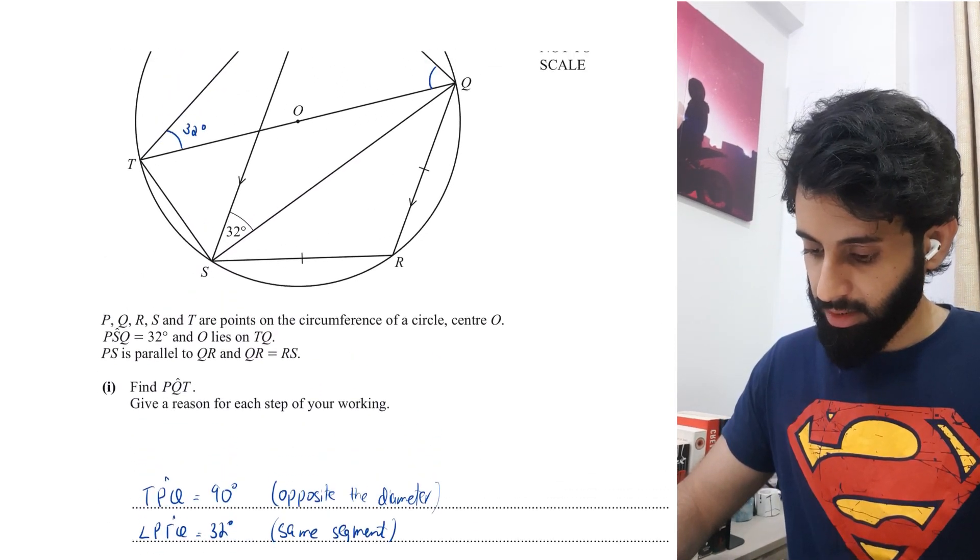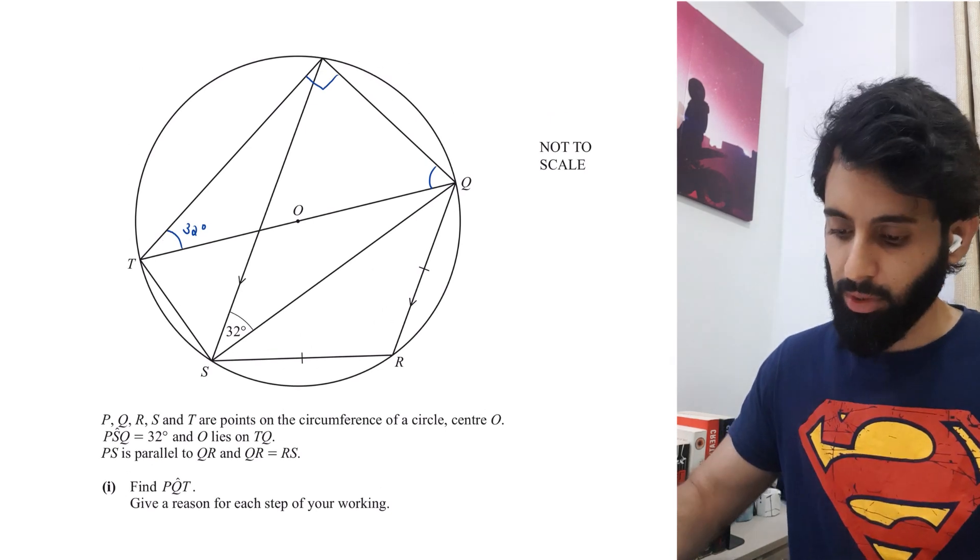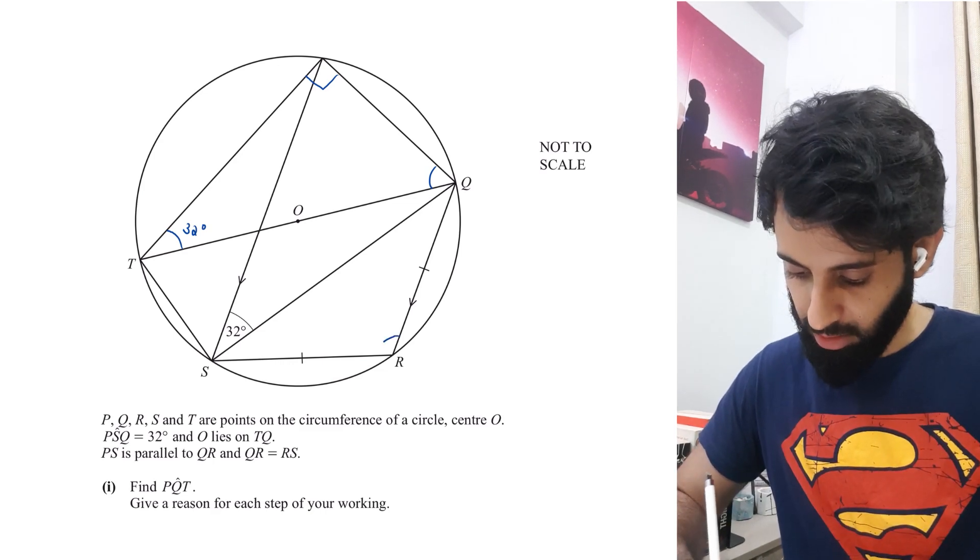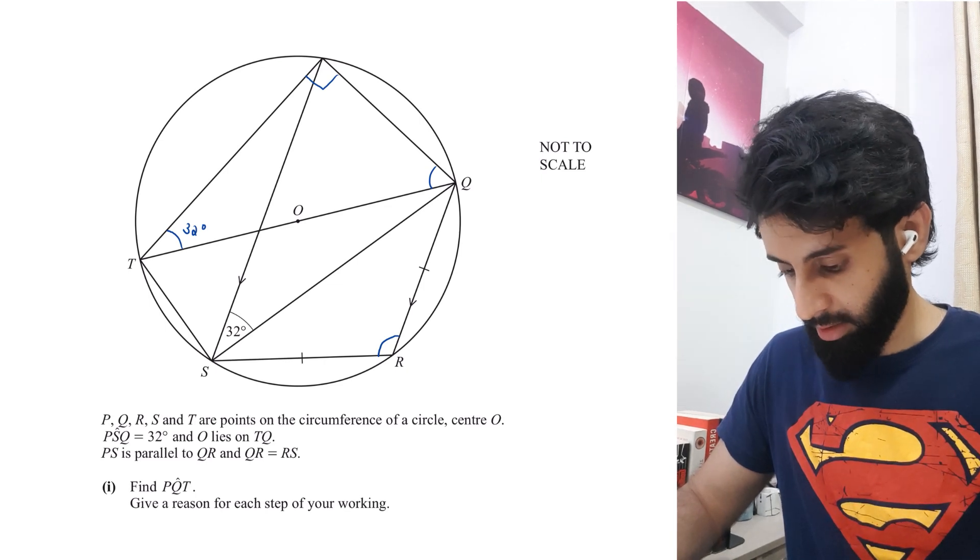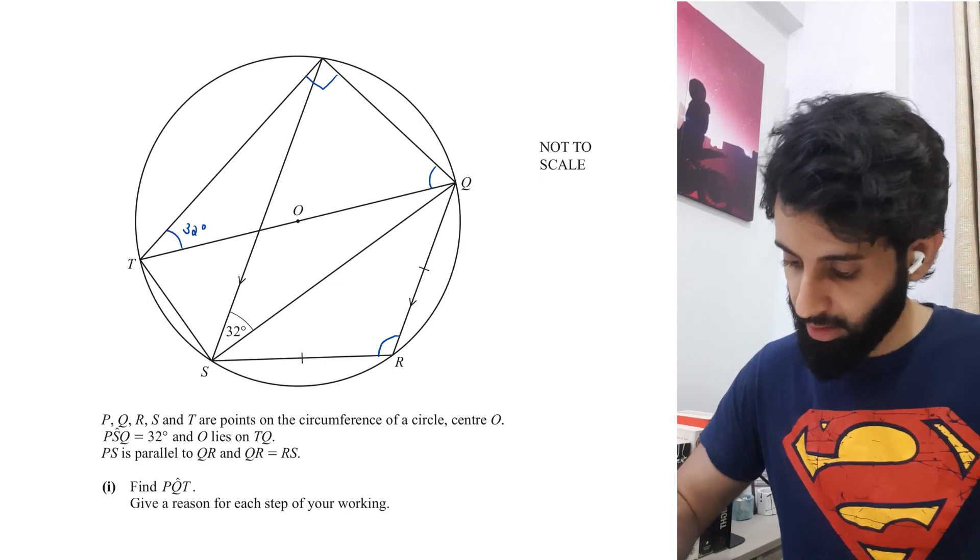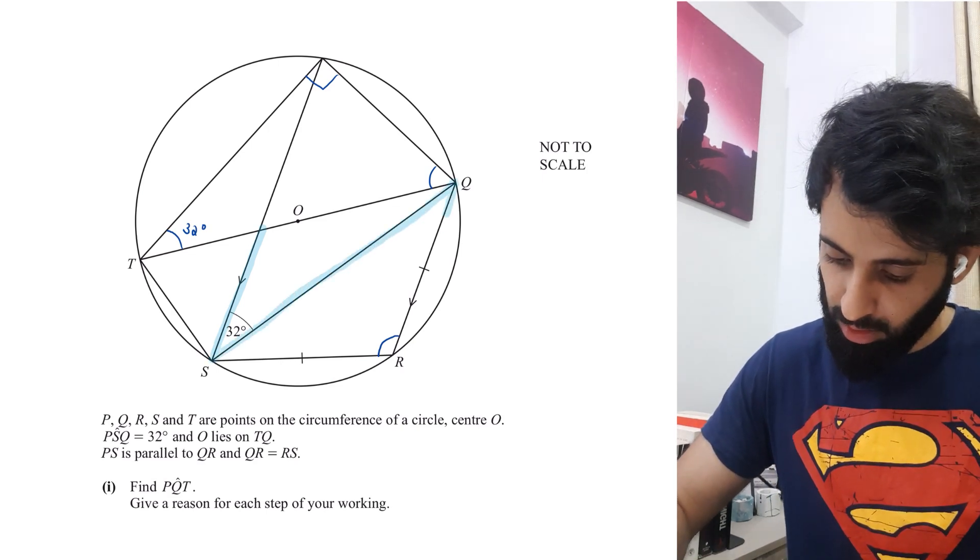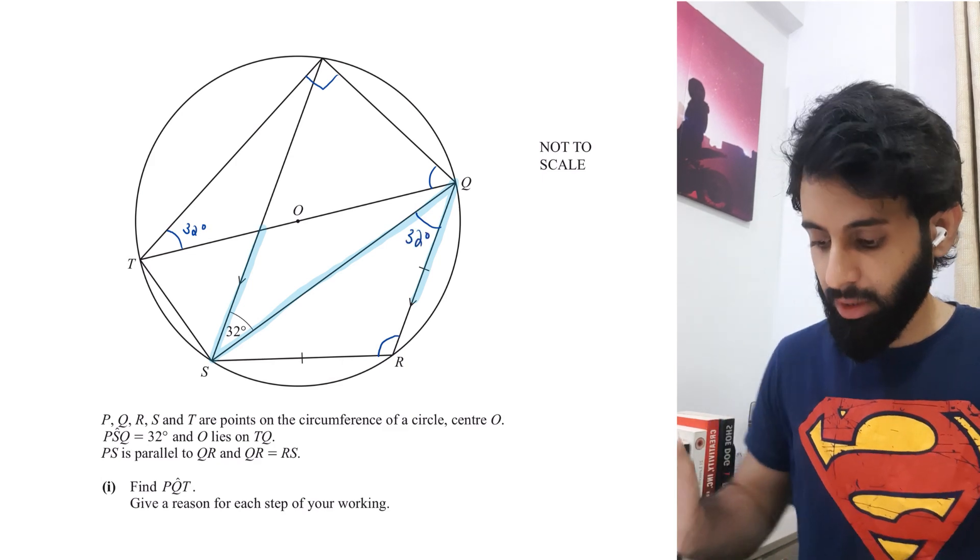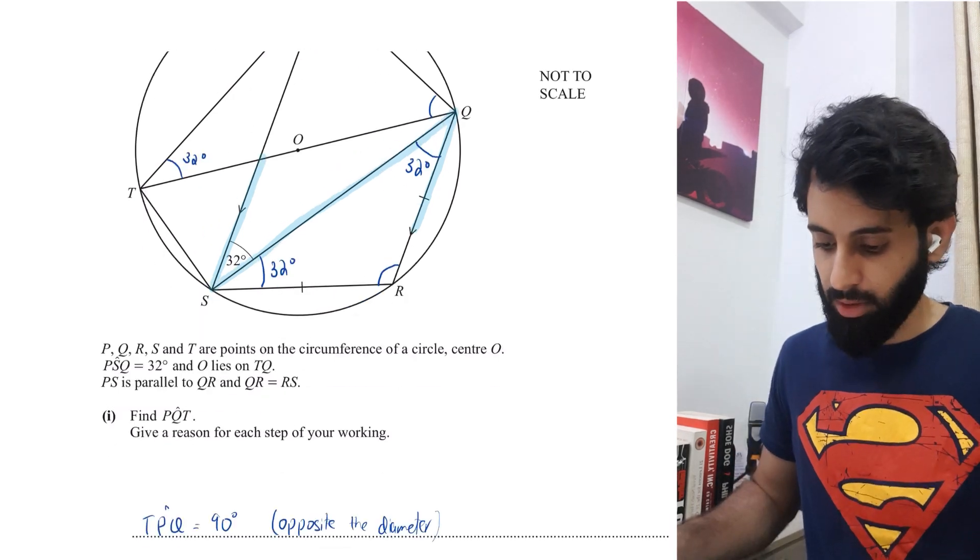Then you have QRS, a two mark question, so you got to show some working. Let's first identify what angle this is - it's this angle. Remember we have a pair of parallel lines in this question, so we are likely to have alternating angles. This angle will also be 32 degrees.